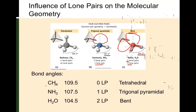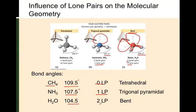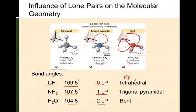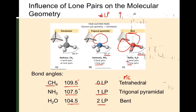To summarize the bond angle trend: with zero lone pairs we have a perfect tetrahedral angle of 109.5 degrees. With one lone pair, the angle decreases. With two lone pairs, it gets even smaller. The different molecular geometries correspond to these cases. The key takeaway is that as the number of lone pairs increases, the bond angle decreases, because lone pairs exert their influence by pushing down on the bonding pairs.